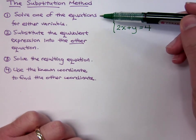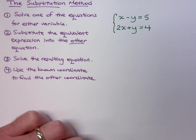The first step is you solve one of these equations for either of the variables. Now it doesn't matter which one you solve for, but you want to be smart about it.